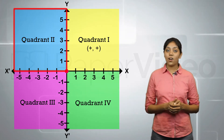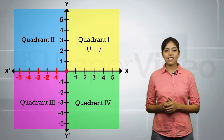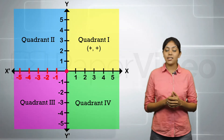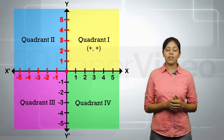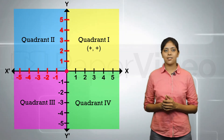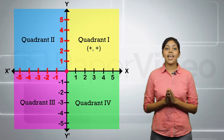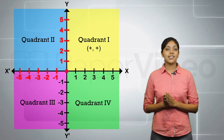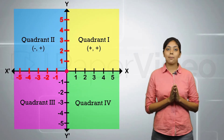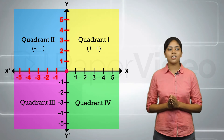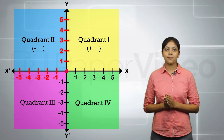In the second quadrant, the x-coordinate is negative but the y-coordinate is positive. This means that any point lying in the second quadrant will have its abscissa negative and ordinate positive.